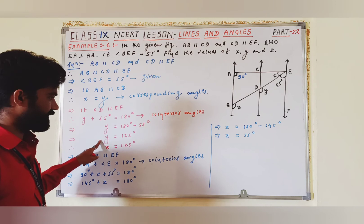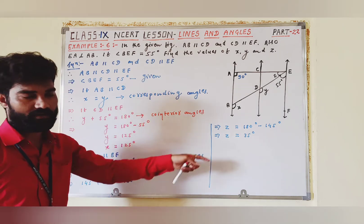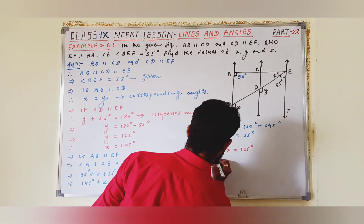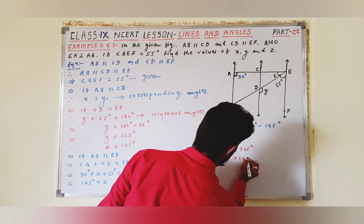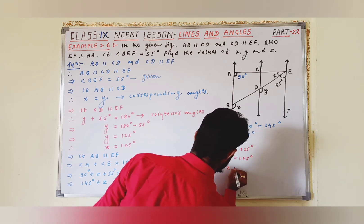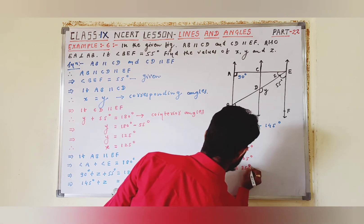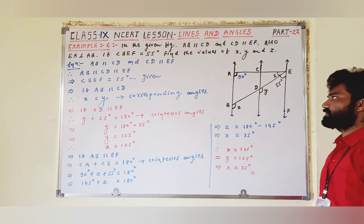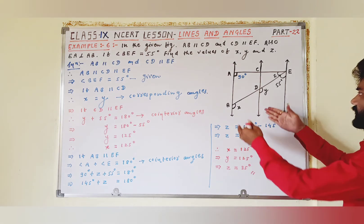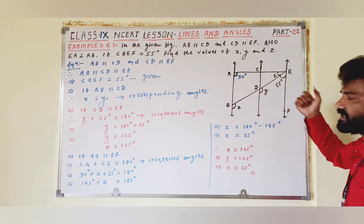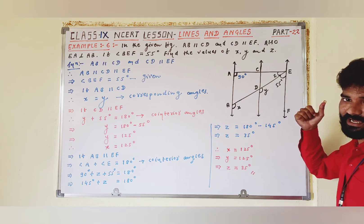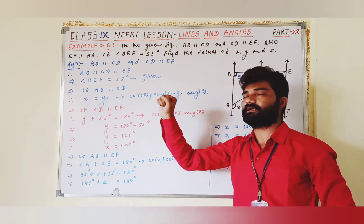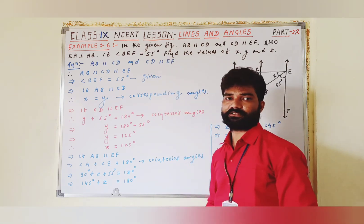तो यहाँपर हमें X, Y, और Z तीनों की values मिल गई। तो last में लिख सकते हैं: X = 125 degree, Y = 125 degree, and Z = 35 degree। यह बहुत simple था। यहाँपर आपको सिर्फ एक identity याद रखनी थी — कि अगर दो parallel lines हैं, तो उनके co-interior angles on the same side supplementary होते हैं, मतलब 180 degree। तो आपको यह question अच्छी तरह समझ में आ गया होगा। Next video में exercise questions देखते हैं। Thank you.